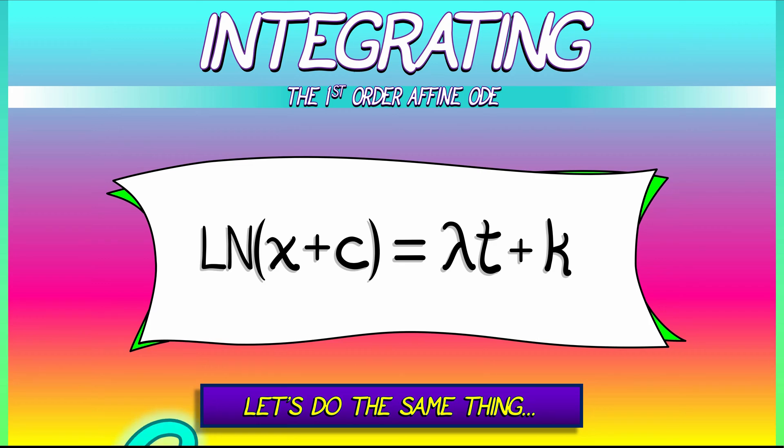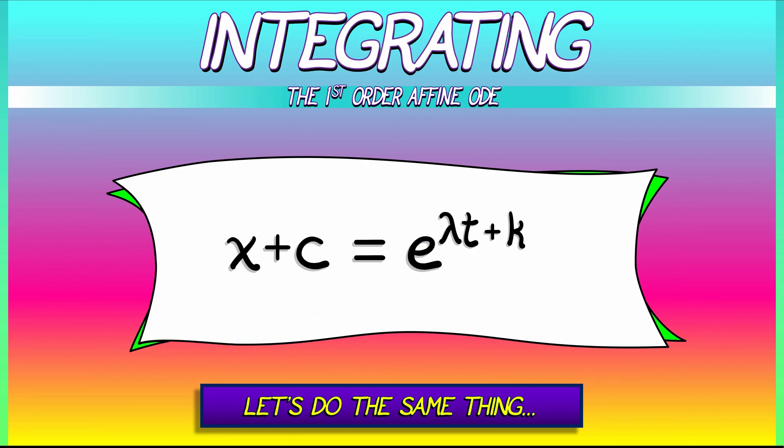Now, exponentiate both sides of the equation. On the left, the exponential and the log undo each other. We get x plus little c equals, on the right, e to the lambda t plus little k.